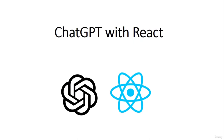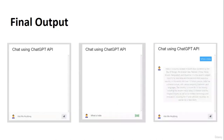Welcome everyone. In this course you are going to learn how you can create a ChatGPT clone using the ChatGPT API with React. First of all, you are going to learn the basics of React and how you can create a React project. This is the output of our project which we are going to build in this course — a chat application UI.